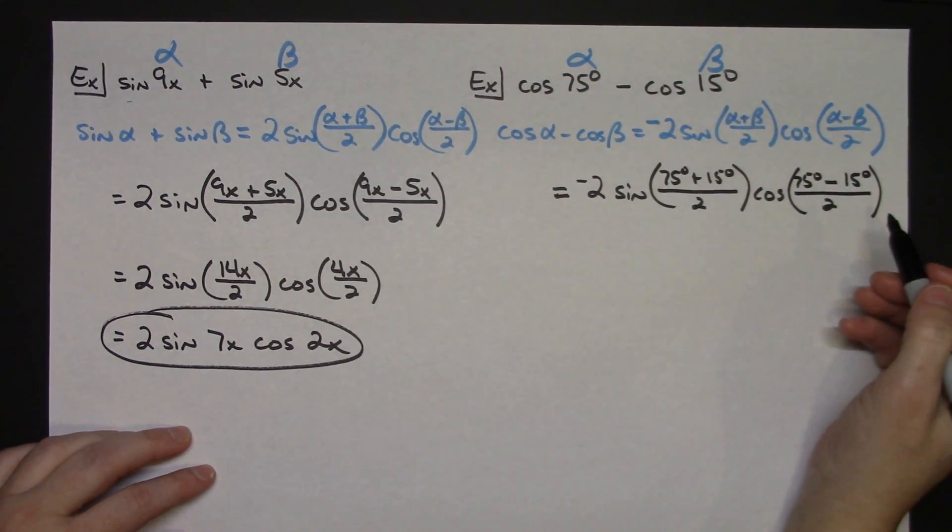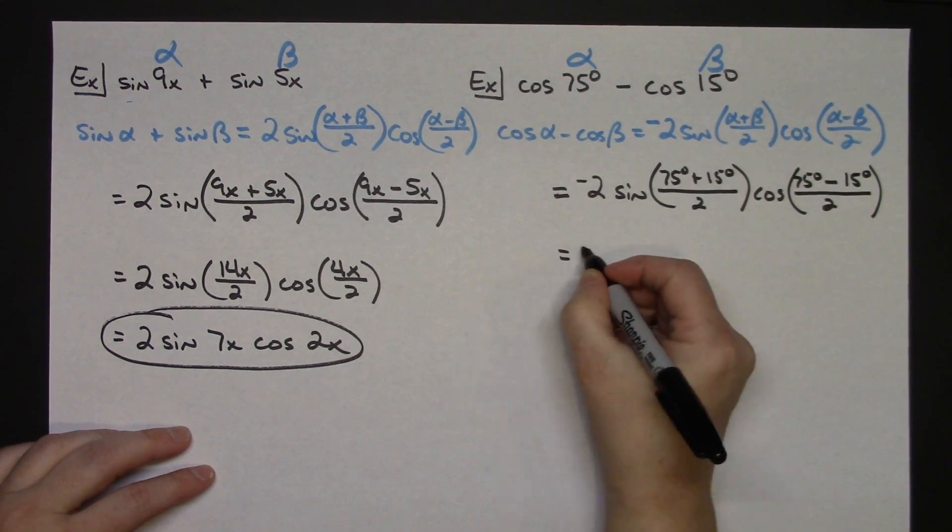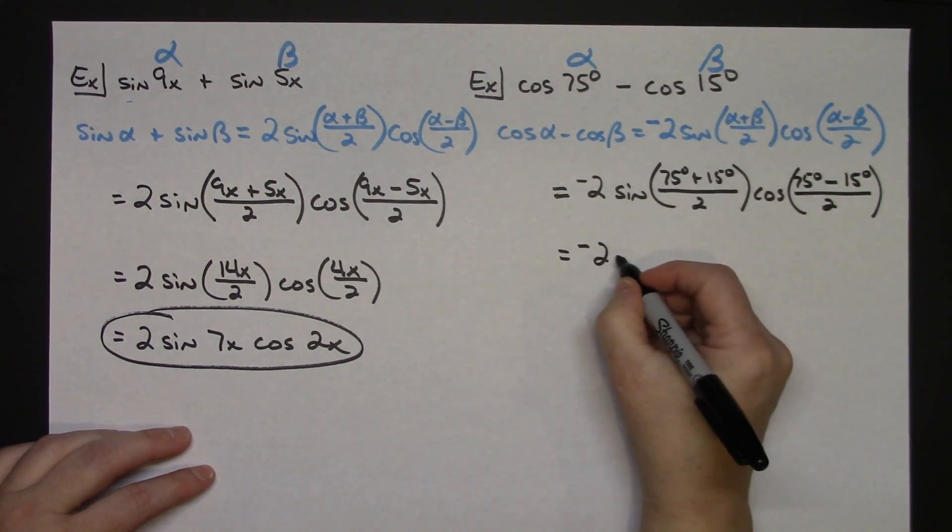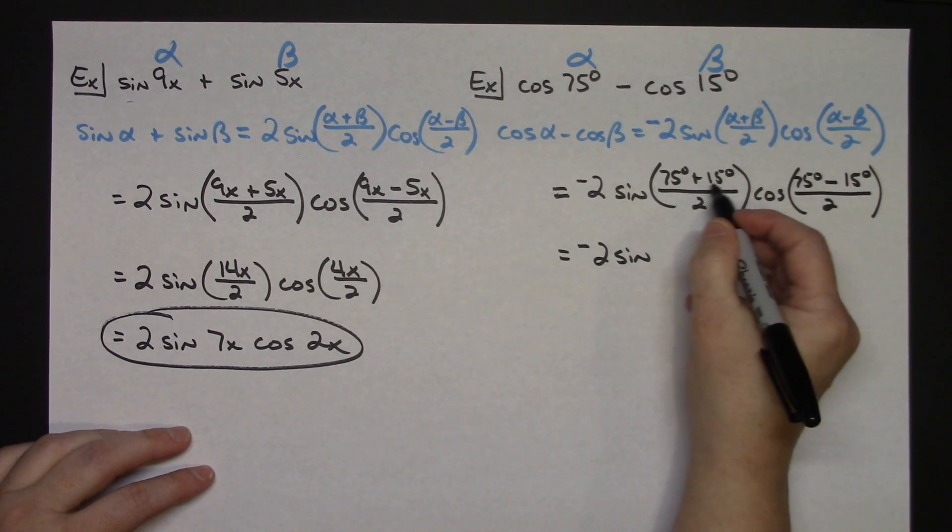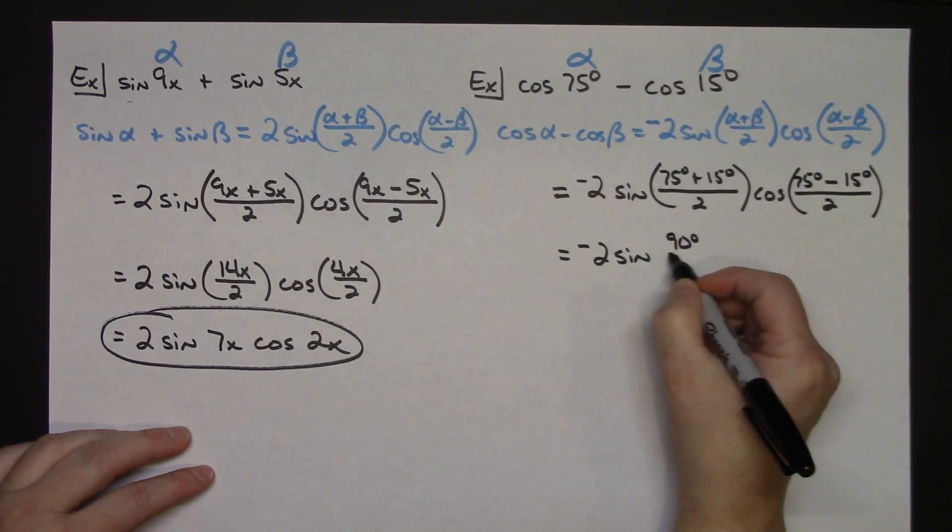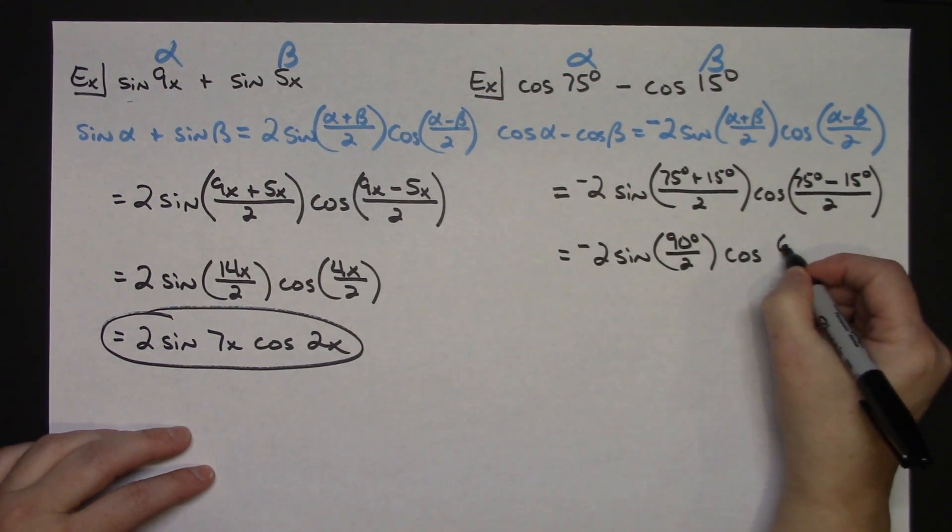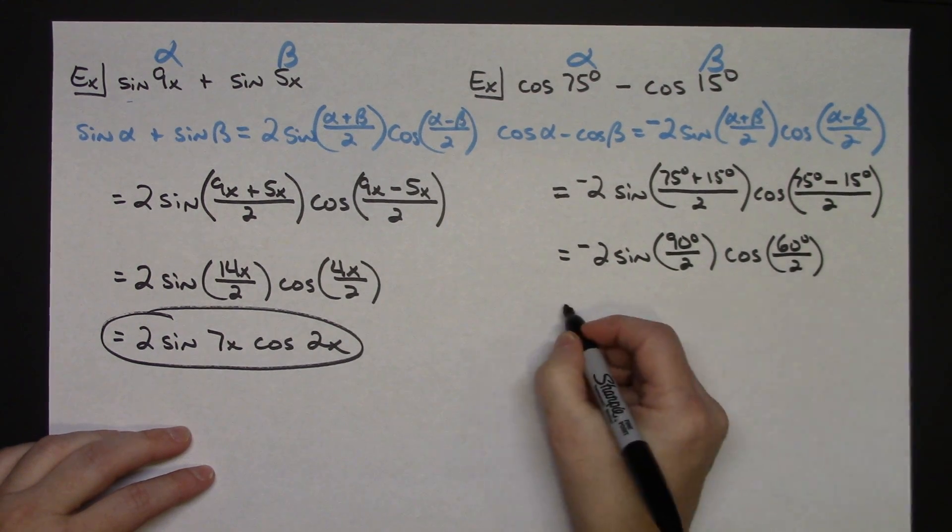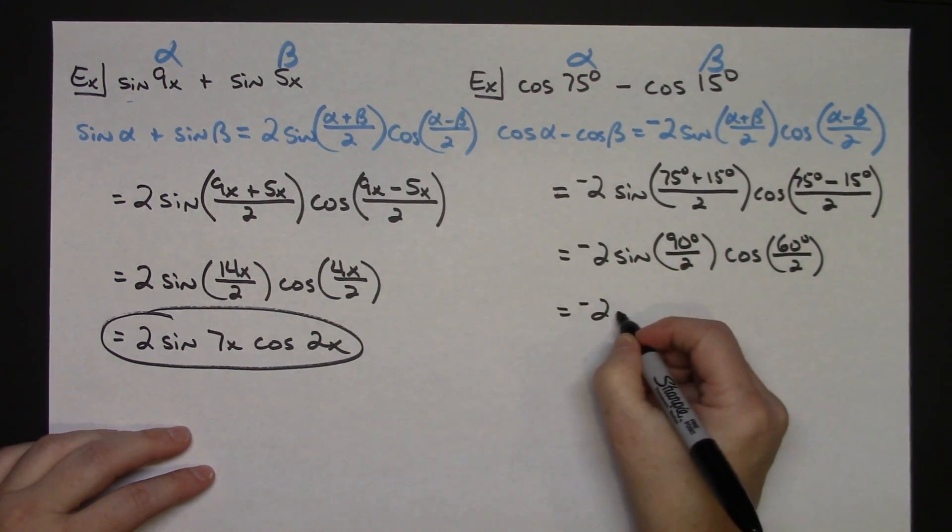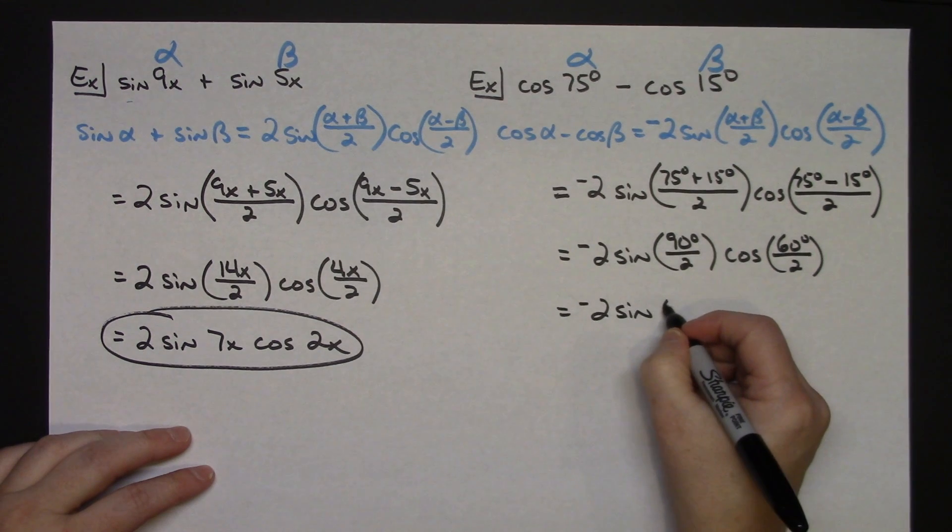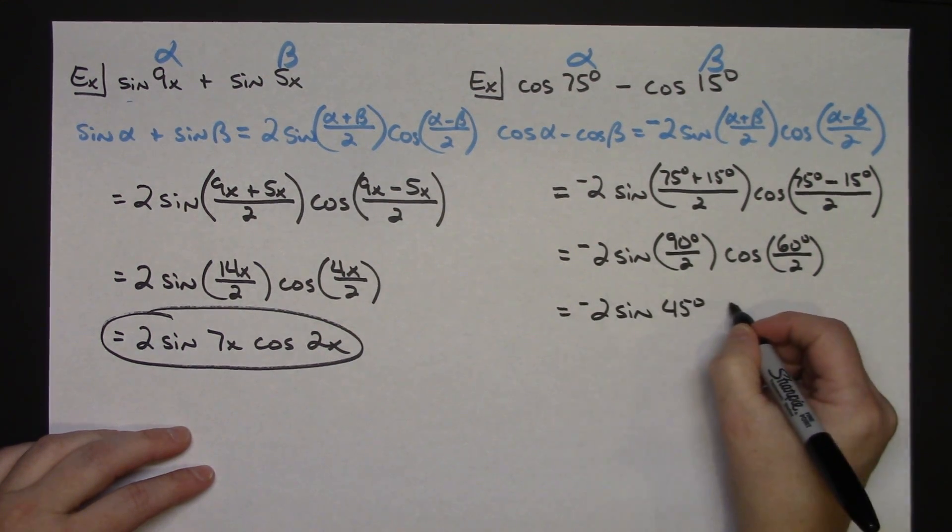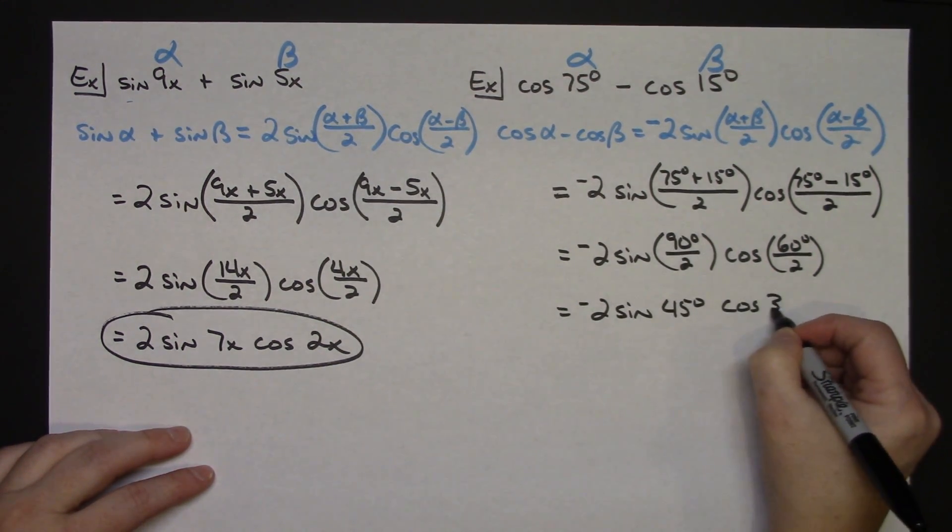And here I've got all numbers so I can do quite a bit of simplifying. Negative 2 sine. When I add there I'll have 90 degrees on top divided by 2. Cosine, when I subtract there I'm going to have 60 degrees on top divided by 2. Again I can continue. Negative 2 sine 45 degrees, cosine 30 degrees.